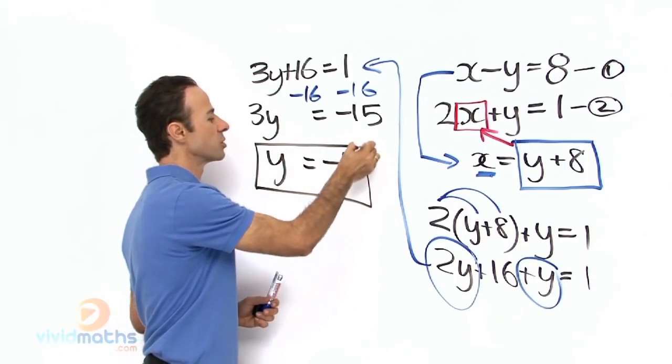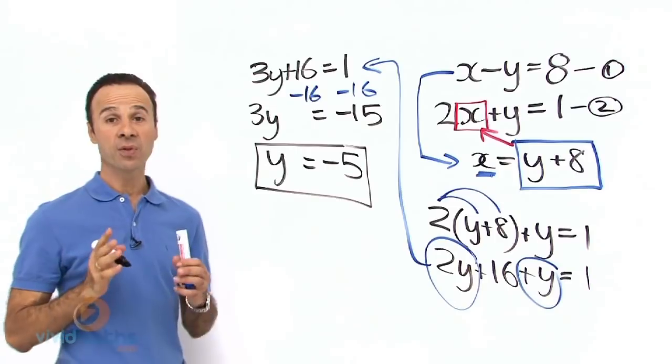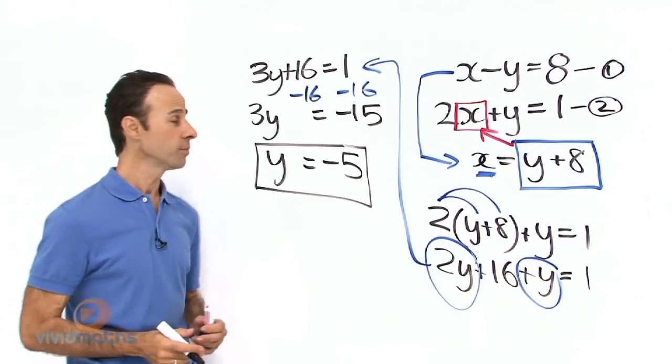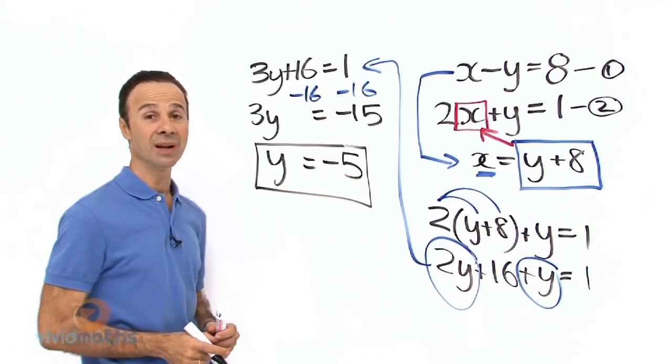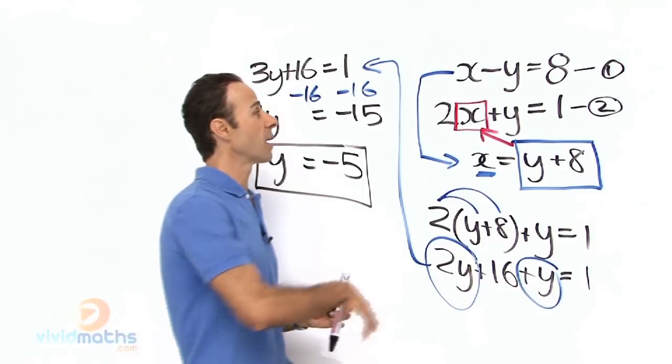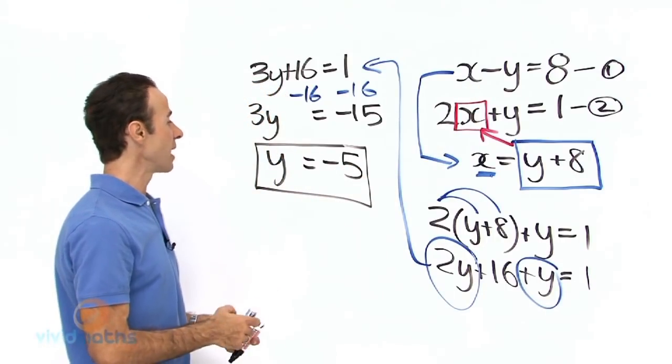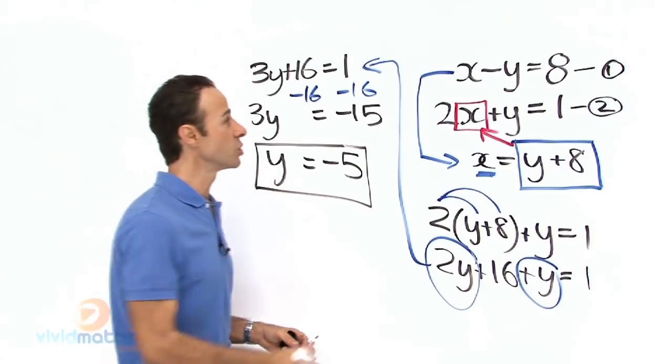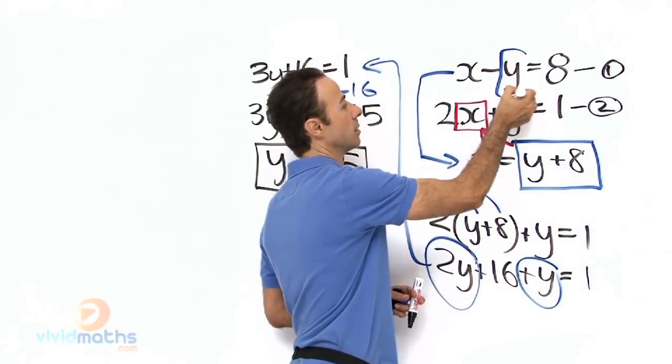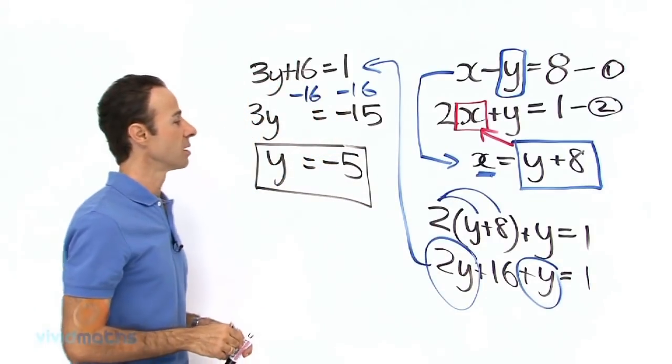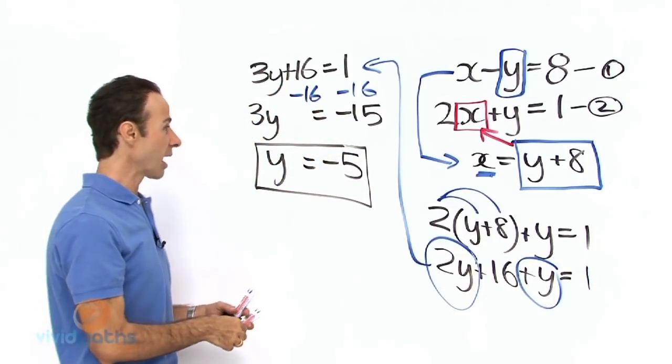So there is one of the pronumerals. Now that we have the first pronumeral, all we have to do is take that and substitute it into the original equation we have up here. So let us substitute that in there. This y here will be substituted in this y here. So let us write out the new equation.